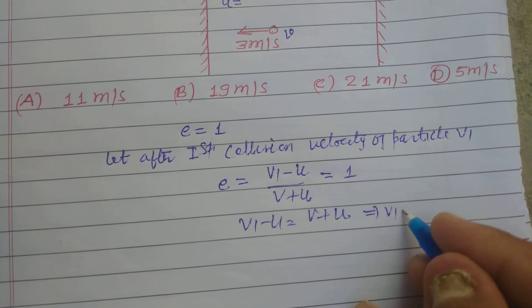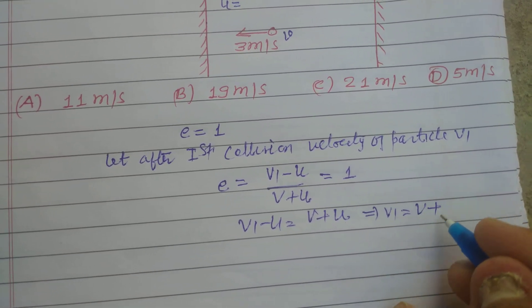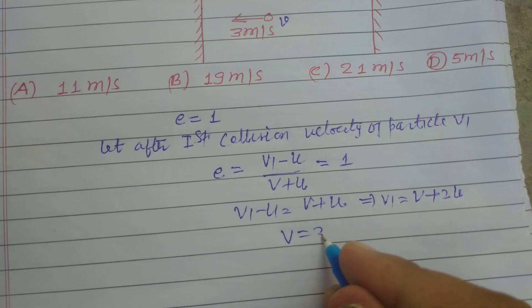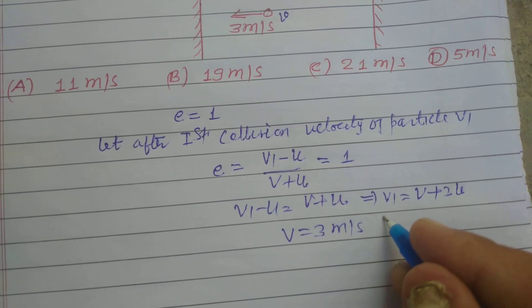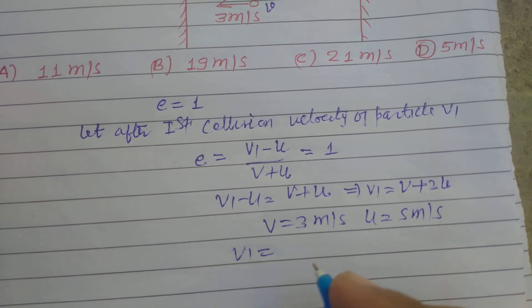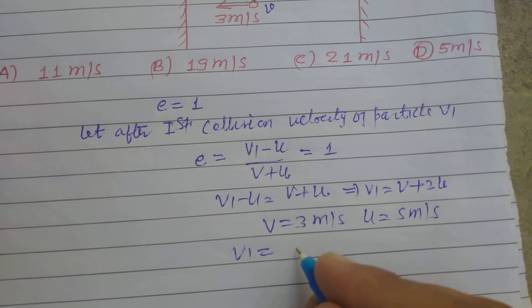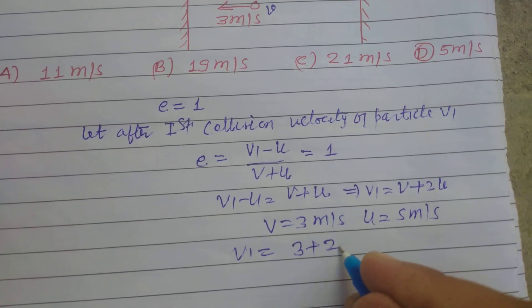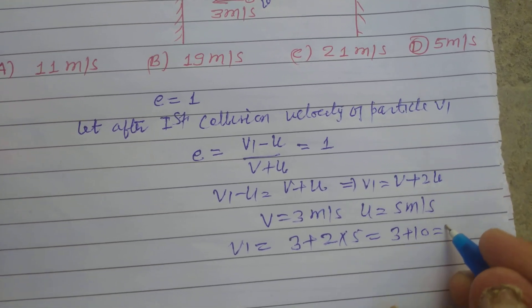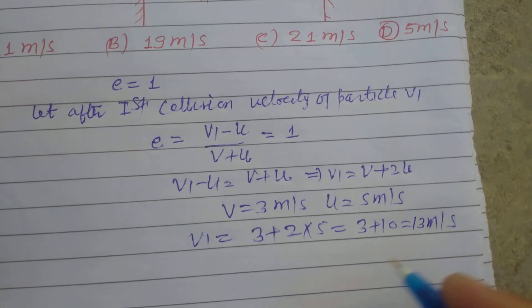It means v1 equals v plus 2u. Here v is 3 meters per second and u is 5 meters per second. So we get v1 after the first collision which is 3 plus 2 times 5. This is 3 plus 10, which equals 13 meters per second.